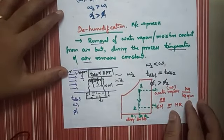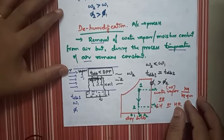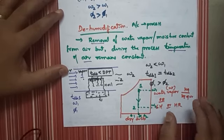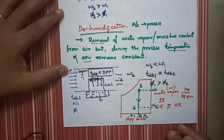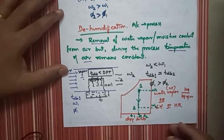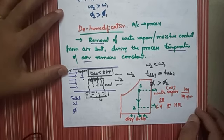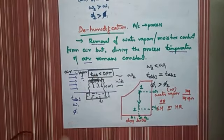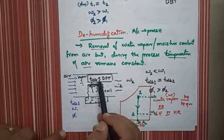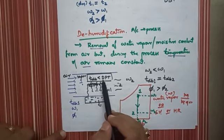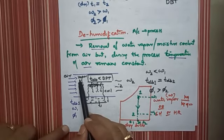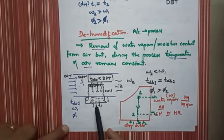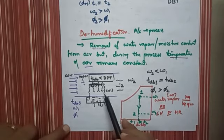Dehumidification can be observed practically: for example, water leakage in an auditorium or AC room where drops of water fall from the ceiling, or water droplets on grass surfaces in early morning (around 3–4 AM). These are all effects of the dehumidification process. The key point is that the dry bulb temperature of the air becomes less than the dew point temperature, causing moisture to condense to liquid, which is then removed.